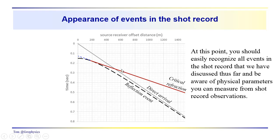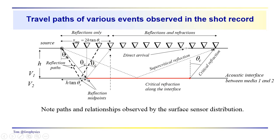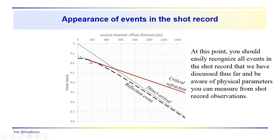And of course we have the critical refraction. Remember, the critical refraction doesn't start until we reach the point where the angle of incidence equals the critical angle. This distance, xmin, is also known as the point of tangency. So we don't see a critical refraction for source-receiver distances less than the minimum distance.